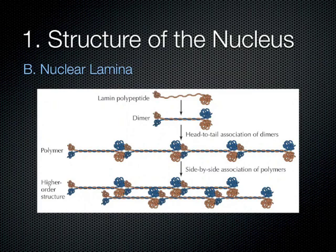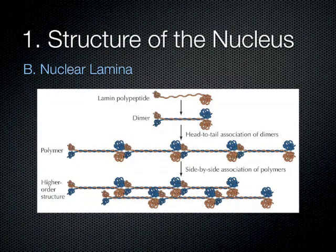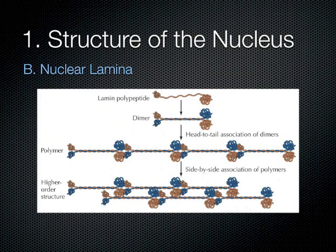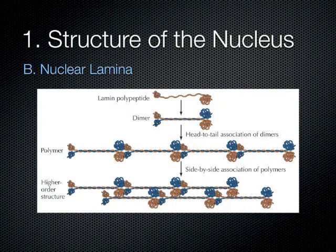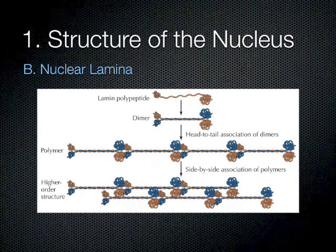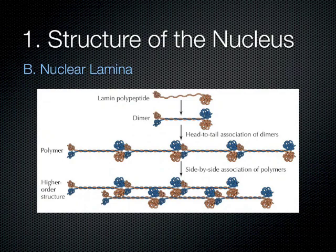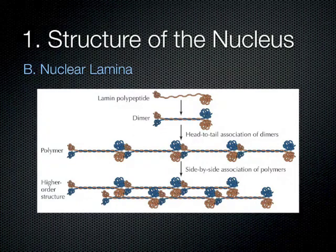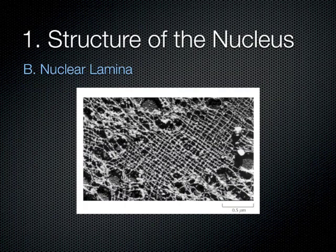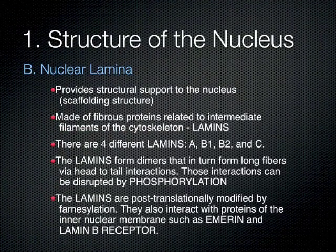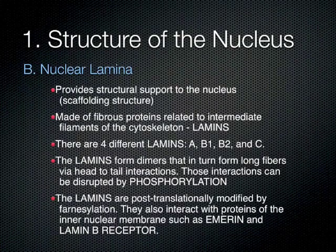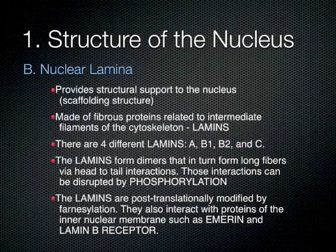These long chains are physically very stable, providing support for the nucleus. They form fibrous structures — almost equivalent to bones — giving shape and support to the nucleus by forming higher-order polymers. That mesh is formed by this type of monomer. The nuclear lamina provides structural support to the nucleus, acting as a scaffolding structure.